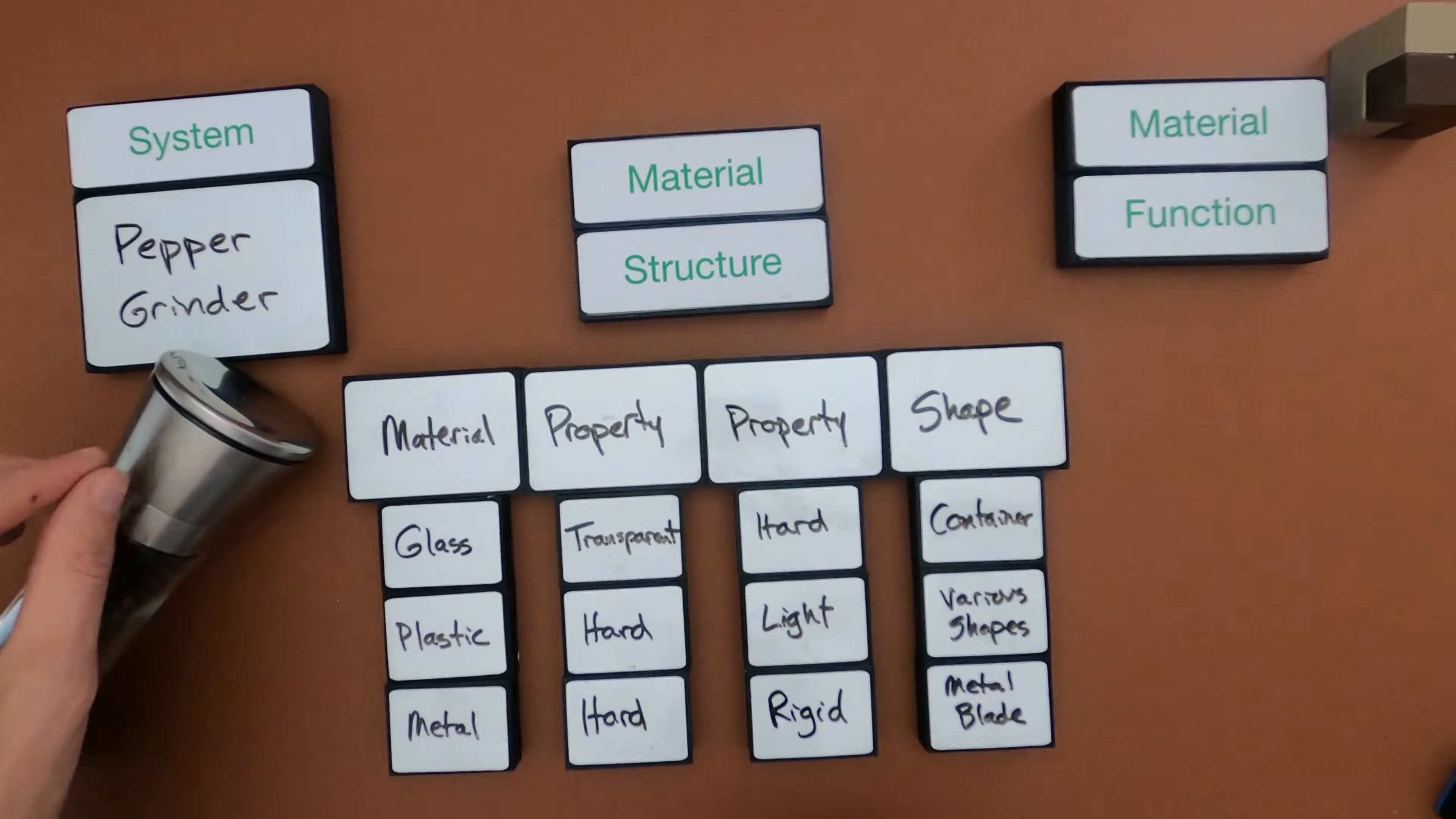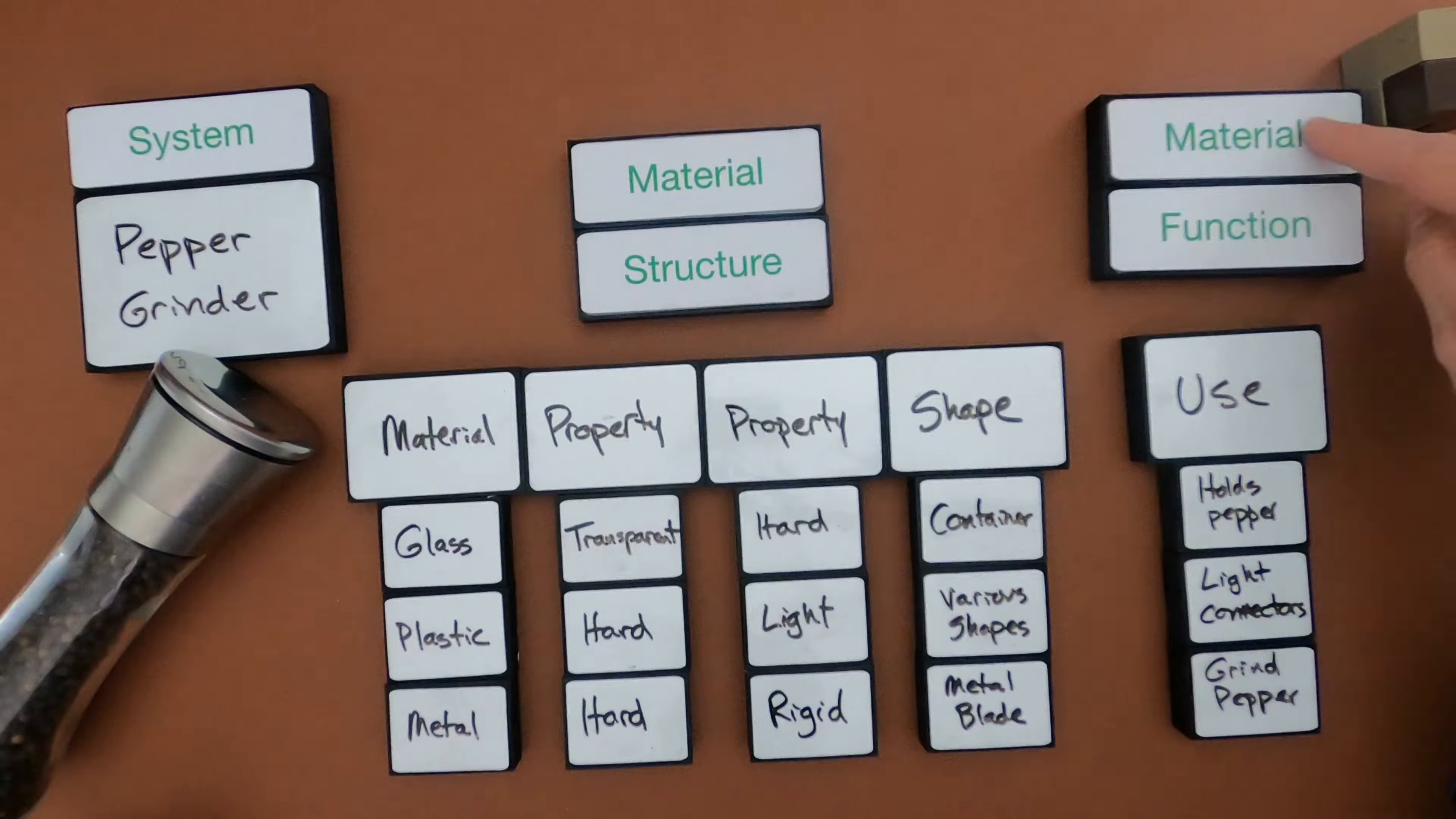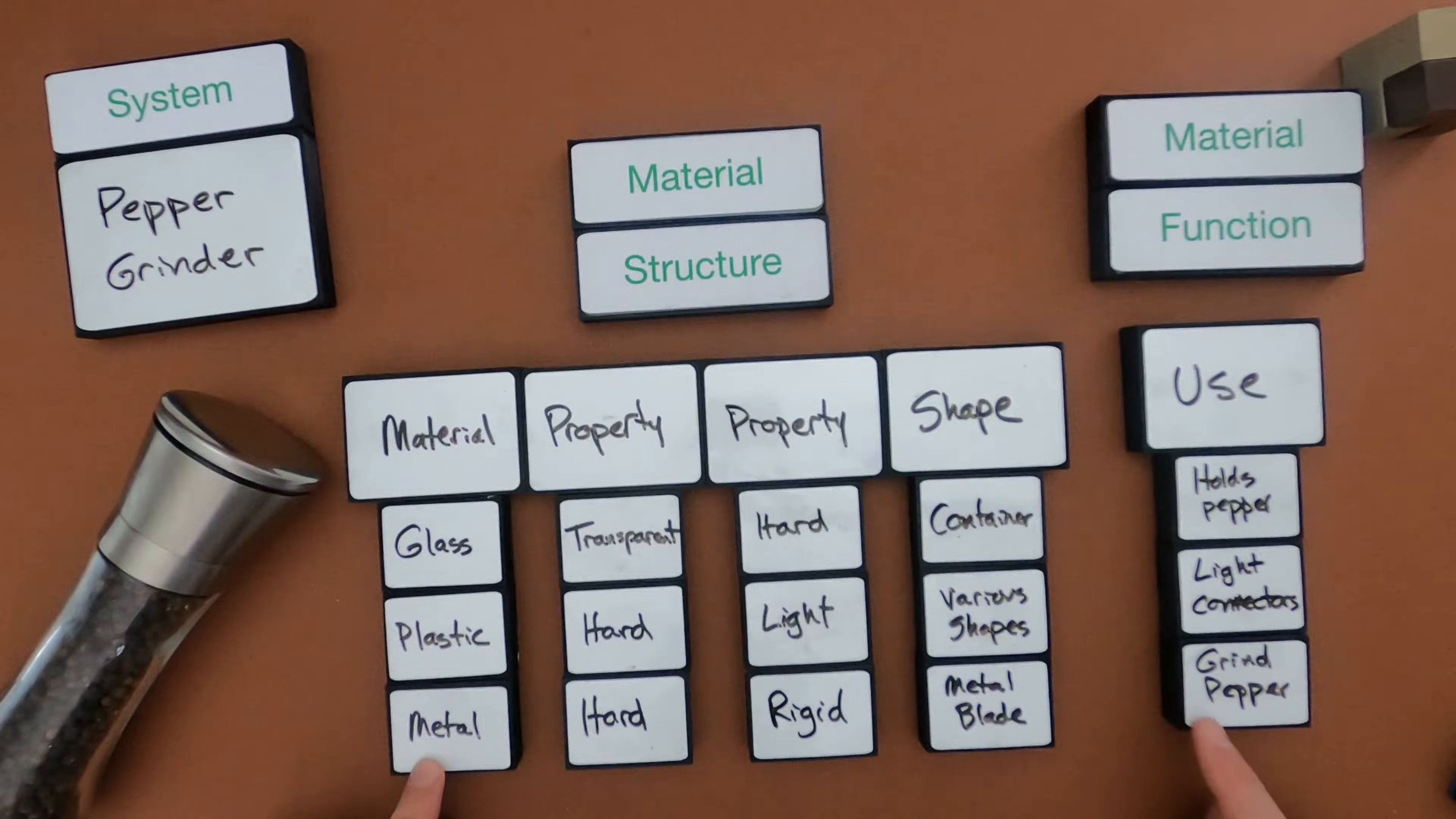Also we have metal on the outside. So the next thing I would do is say, okay, so these are the material structures here. What are the uses of those? All right, so some particular material functions that I have. The use of the glass is to hold the pepper. The fact that it's transparent is nice, so I can see the peppercorns on the inside. It gives it a real nice design. If we think about all of the plastic, it makes all these light connecting parts of the pepper grinder. And then if we think about why did they choose metal, well that's to actually do the grinding.